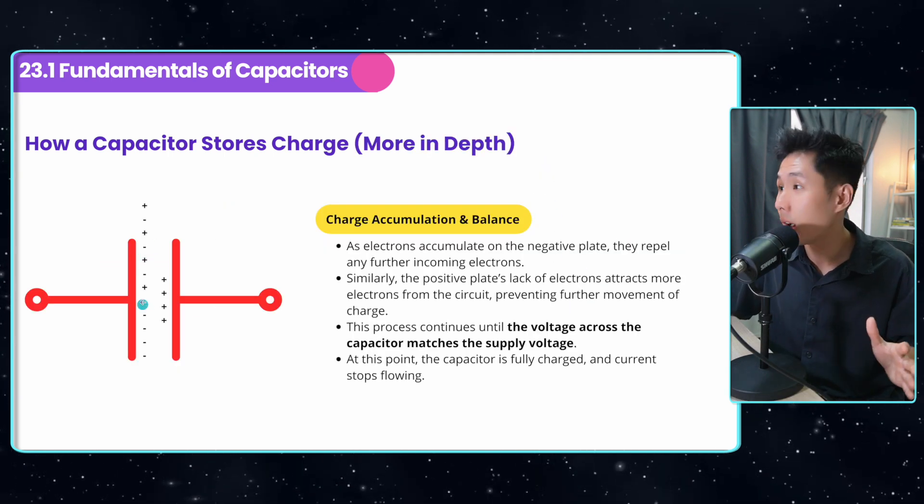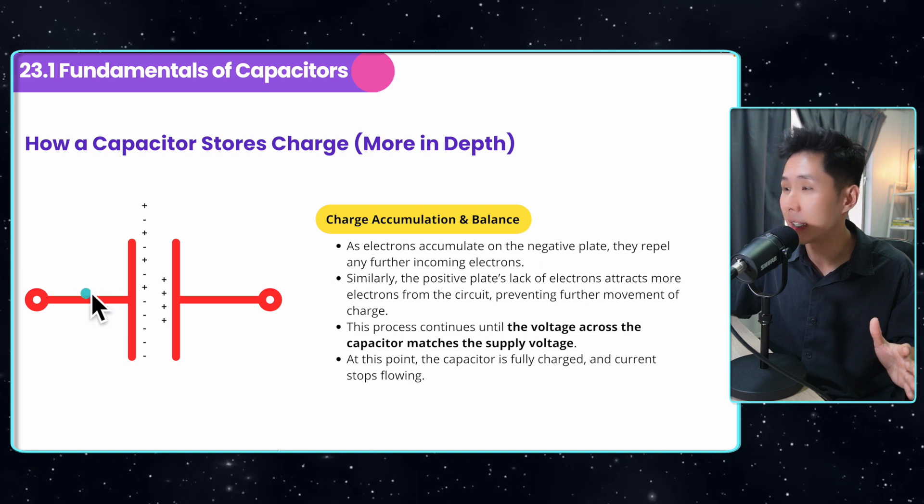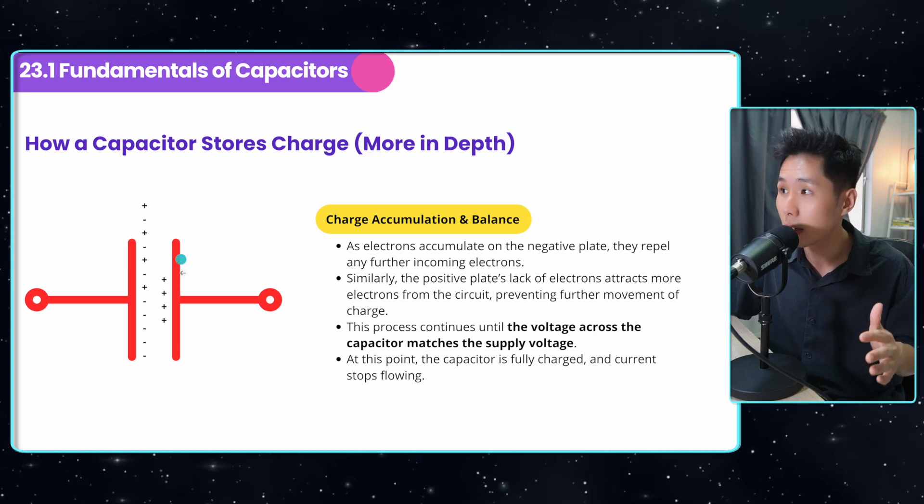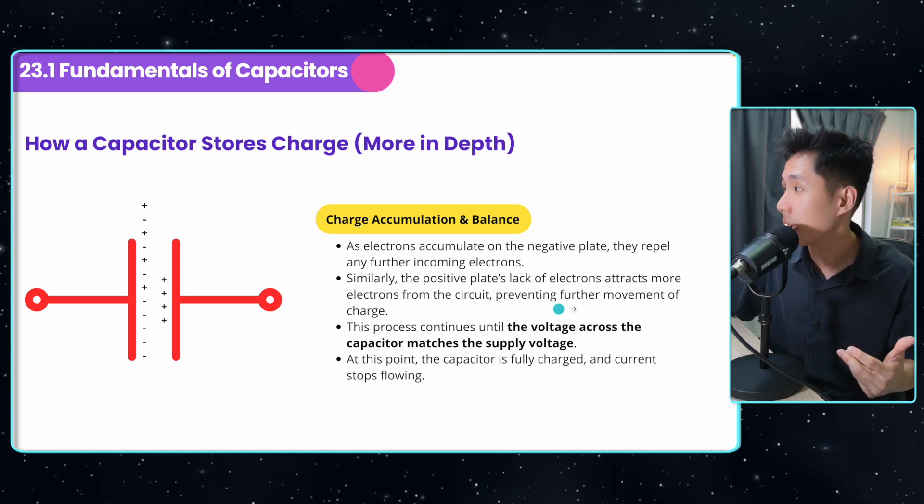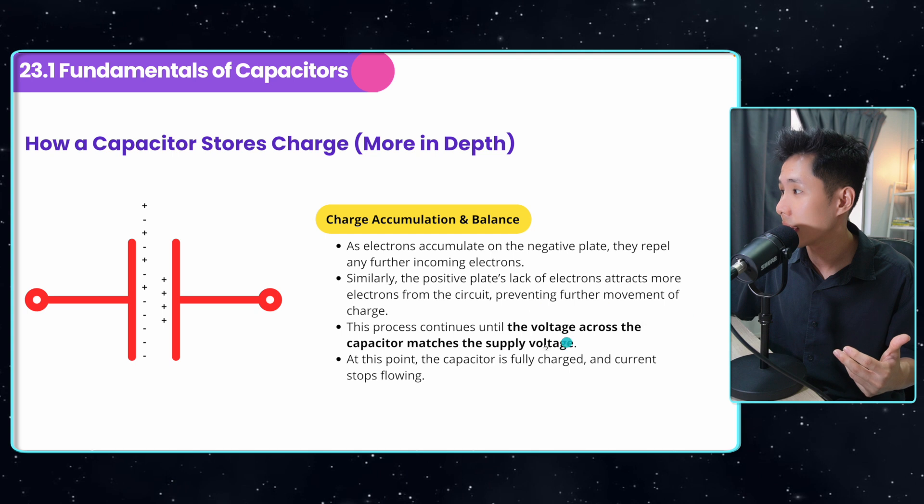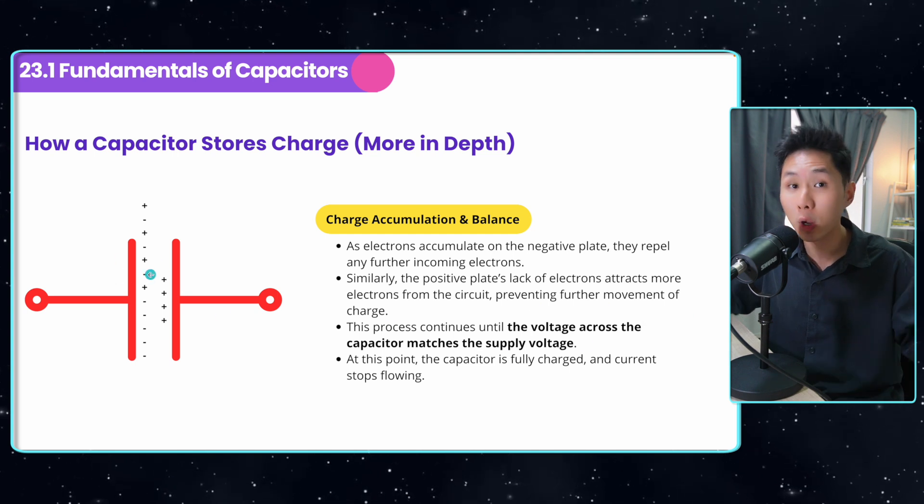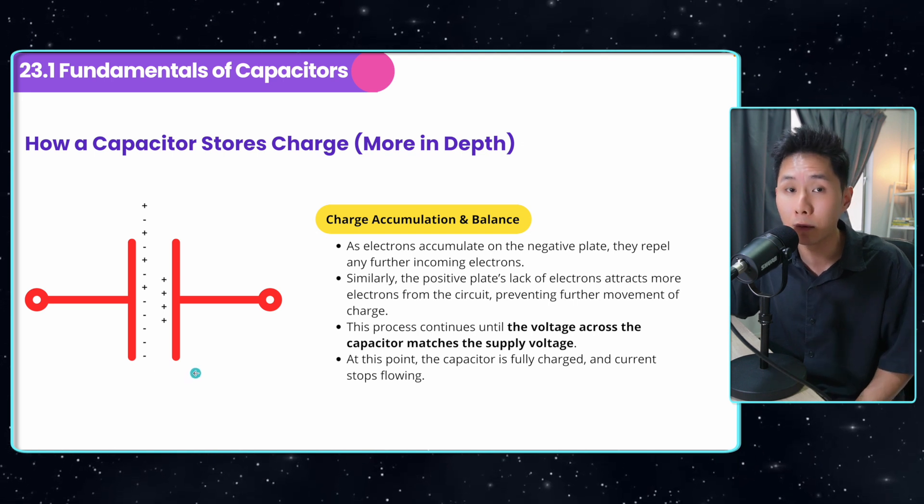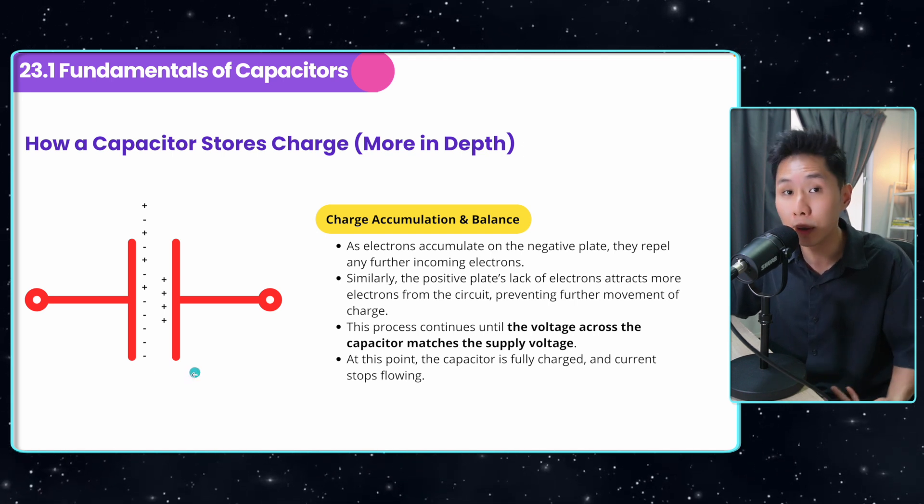As electrons accumulate on the negative plate, they repel any incoming electrons. And similarly, for the positive plate here, the lack of electrons attract more electrons from the circuit, preventing further movement of charge. And this process will continue until the voltage across this capacitor matches the supply voltage, meaning it is fully charged.